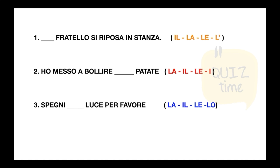Fratello si riposa in stanza. In Italian, we use il, la, le, and l'apostrofo as determinative articles. Le patate — la patate — il patate — i patate. Choose the correct article for patate.